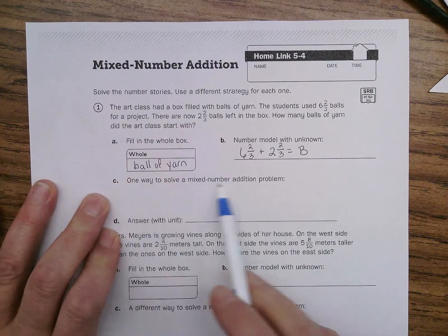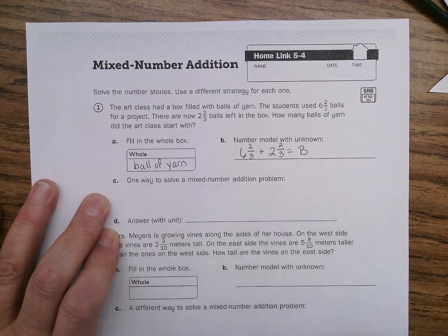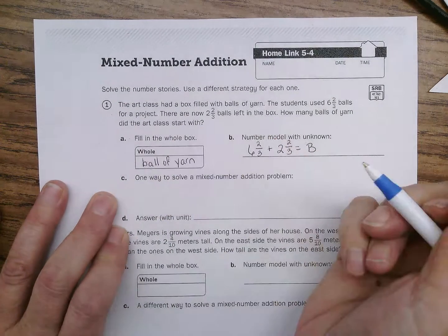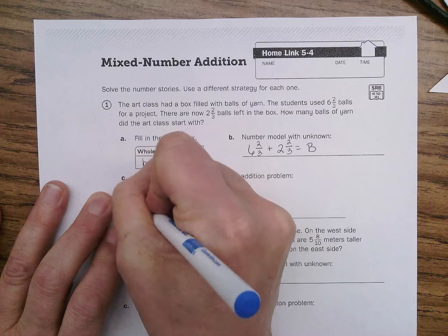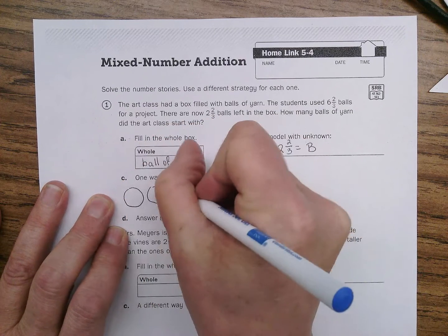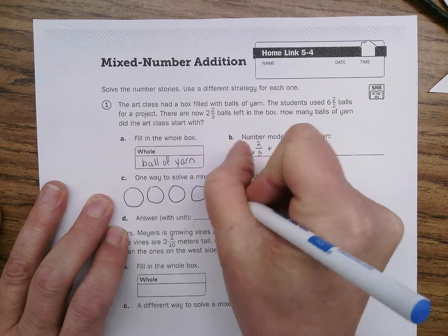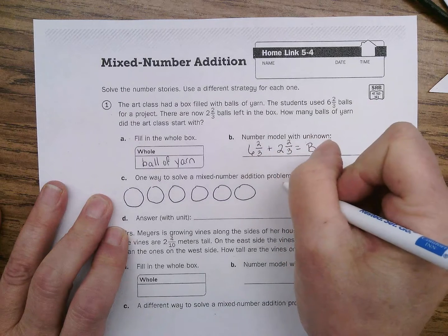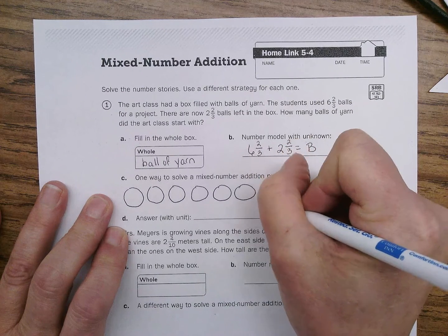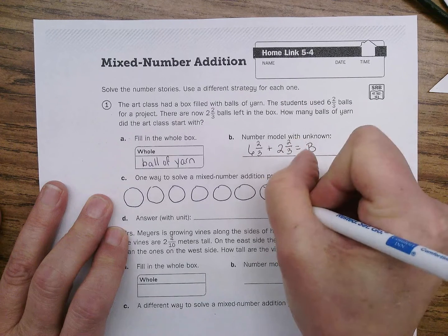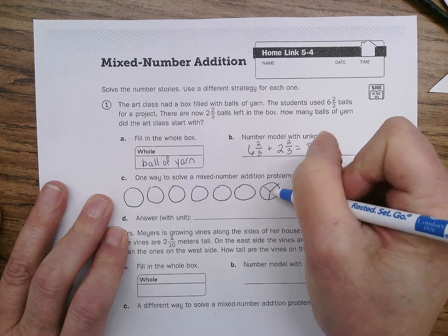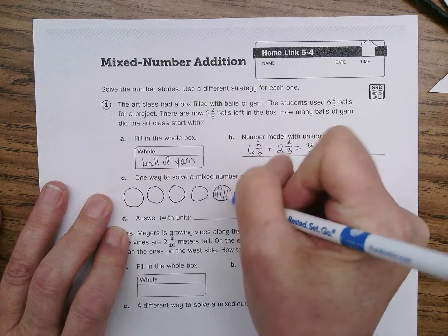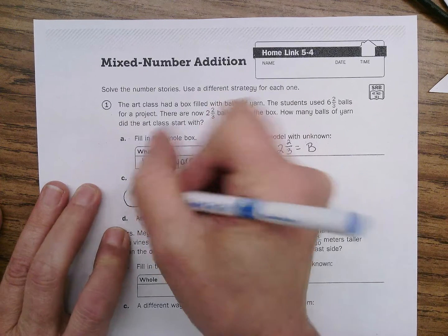Okay, so one way to solve a mixed number addition problem is, how about if we make six balls of yarn. Kind of look like pizzas, right guys? One, two, three, four, five, six, and then two-thirds. So I'm going to make two-thirds. Six and two-thirds. I guess we'll shade all those in, since I shaded my two-thirds.